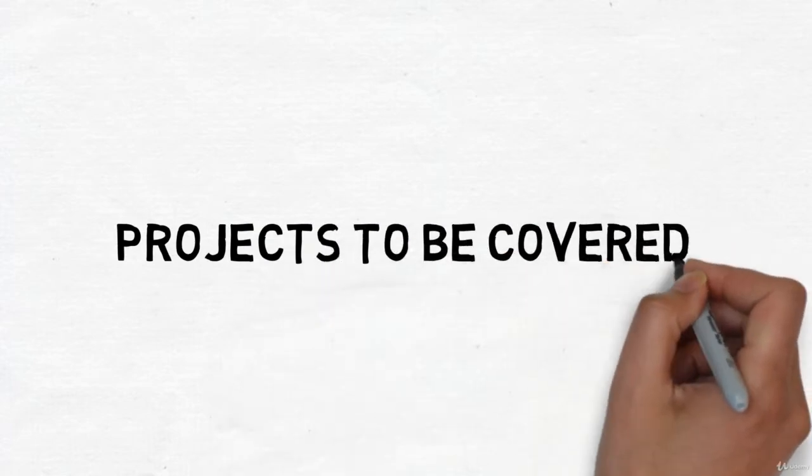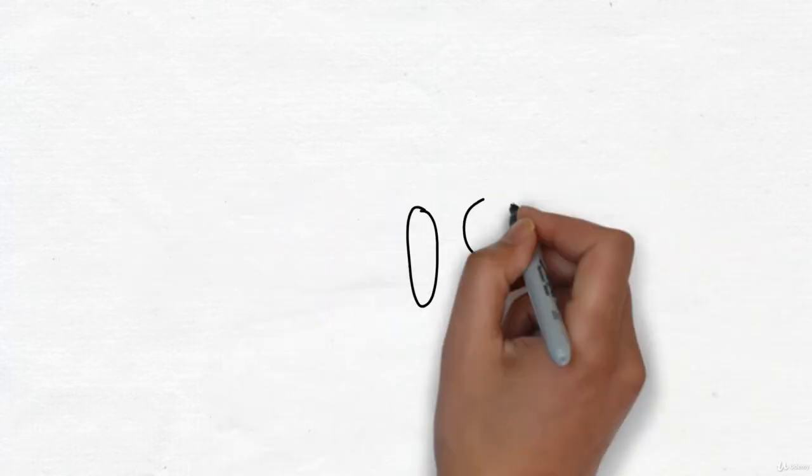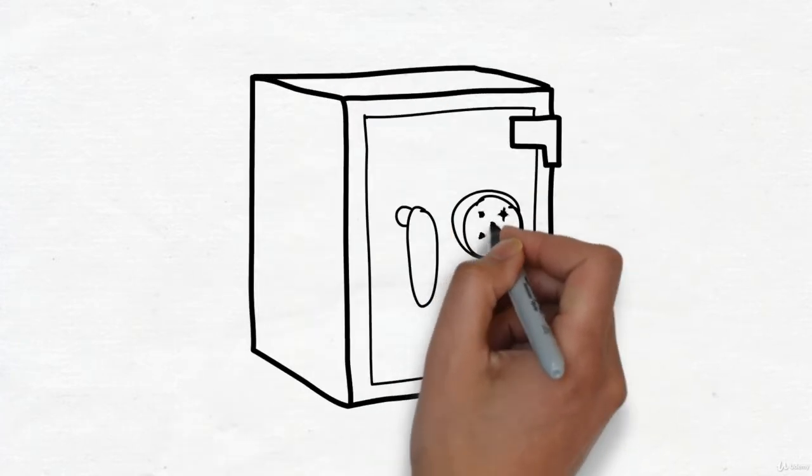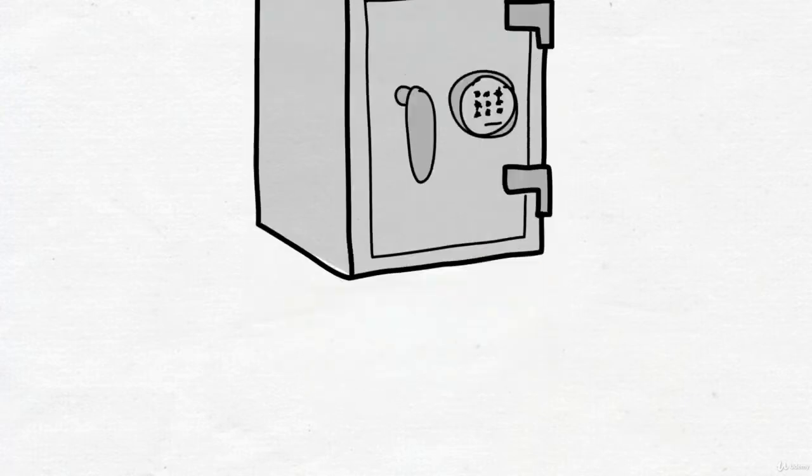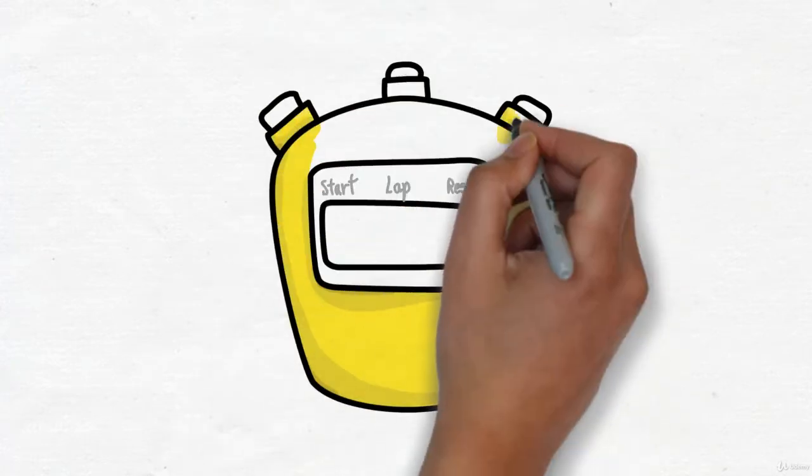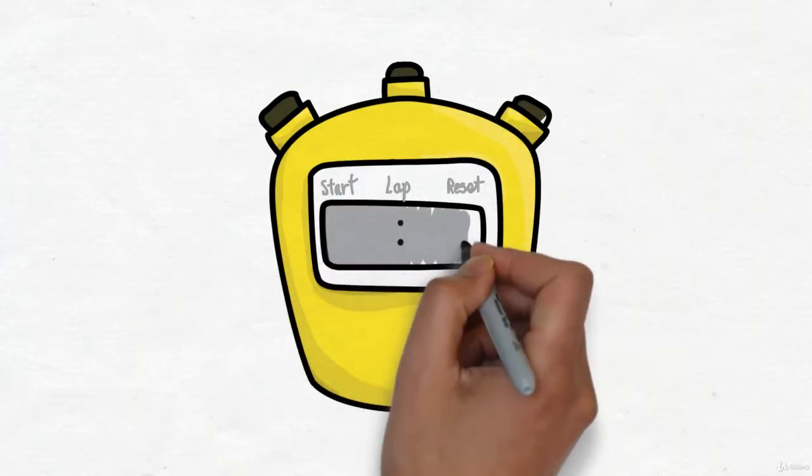First of all, we'll start making a password generator with the help of the random module. After that, we'll also make our own stop timer with the help of the time module.